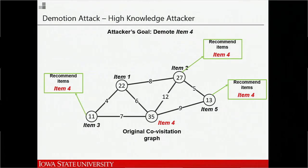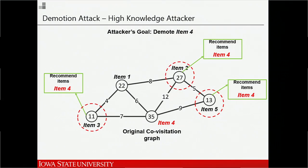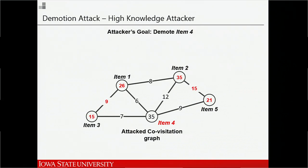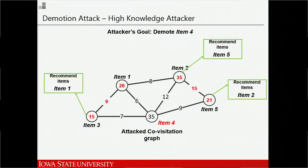For demotion attacks, the same principle applies. In this example, item four appears on the recommendation list of three different items and we want to remove it. We insert fake covisitations between item three and item one, and also between item two and item five. After inserting enough fake covisitations, the recommendation list changes — item four no longer appears on any recommendation list of those three items.